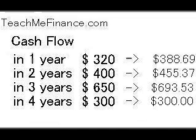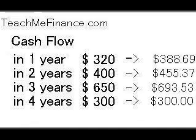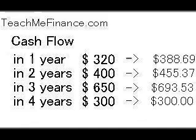Now, finally, you take all these numbers and add them up. The first payment, which was for $320, has grown to $388.69. The second payment, which was for $400, has grown to $455.37. The third payment, which was for $650, has grown to $693.53. And the fourth payment for $300 is still $300, because it hasn't had the opportunity to earn interest.